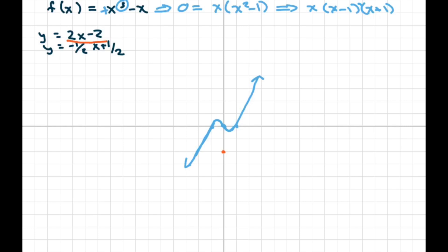So our y-intercept is negative two and our slope is two. So go up two over one. When you graph that, there's your tangent line.